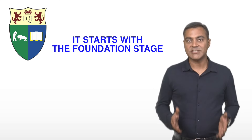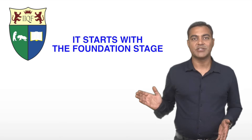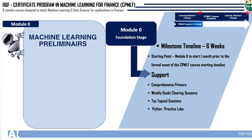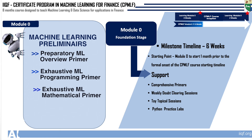It starts with the foundation stage, which is Module 0. Let's see on these slides on your screen to cover the course content which relates to Module 0. Module 0 covers the machine learning preliminaries. This module is meant for someone who doesn't come with any background so that they won't be required to do any prerequisites. It covers the preparatory ML overview primer and the exhaustive machine learning programming primer, which covers all the analytical languages like Python and all the libraries required for implementation of specific algorithms. It also provides a deep understanding into the mathematics which underpins machine learning, introducing all the mathematical topics required in the foundation stage so that you won't struggle later on.